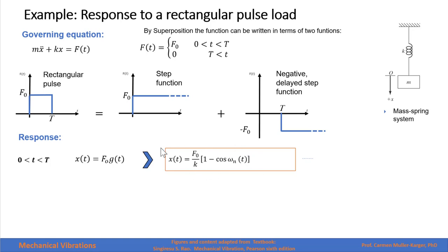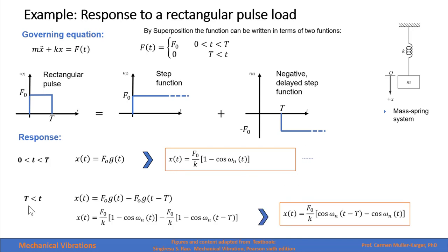For time greater than 0 and less than capital T, the response will be F sub 0 times the response of a unitary step function, which we already know. Therefore, the response for this period before capital T is this function right here. For time greater than capital T, we have the original step function minus the delayed step function, giving this expression — the same step function minus another step function delayed by capital T. This is our response for times greater than capital T.